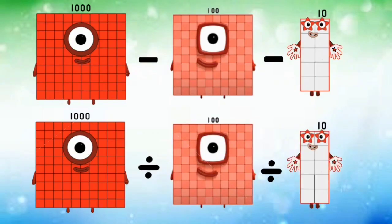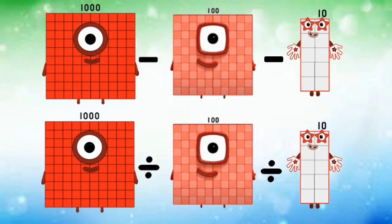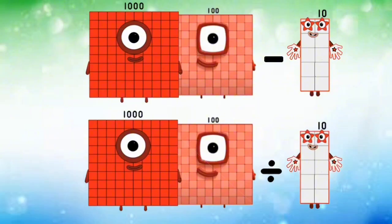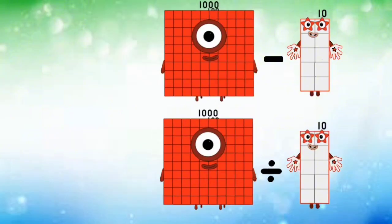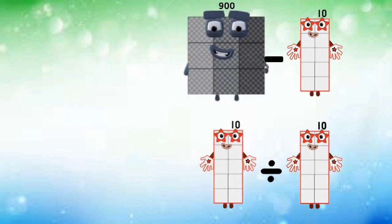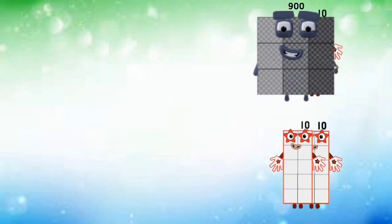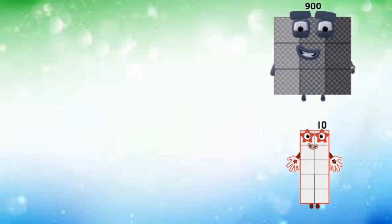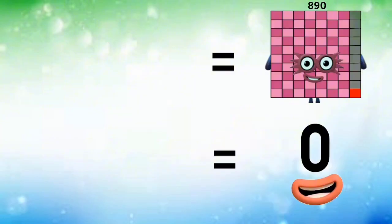1000 subtracted and divided by 100 equals 900 and 10. 900 minus 10 and 10 divided by 10 equals 890 and 0.